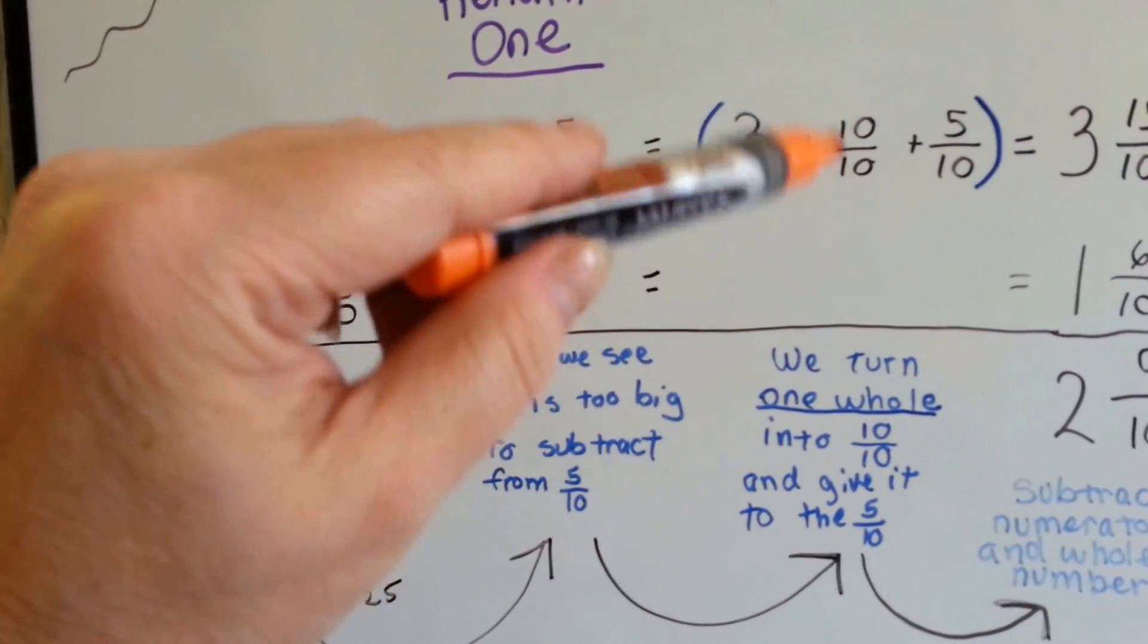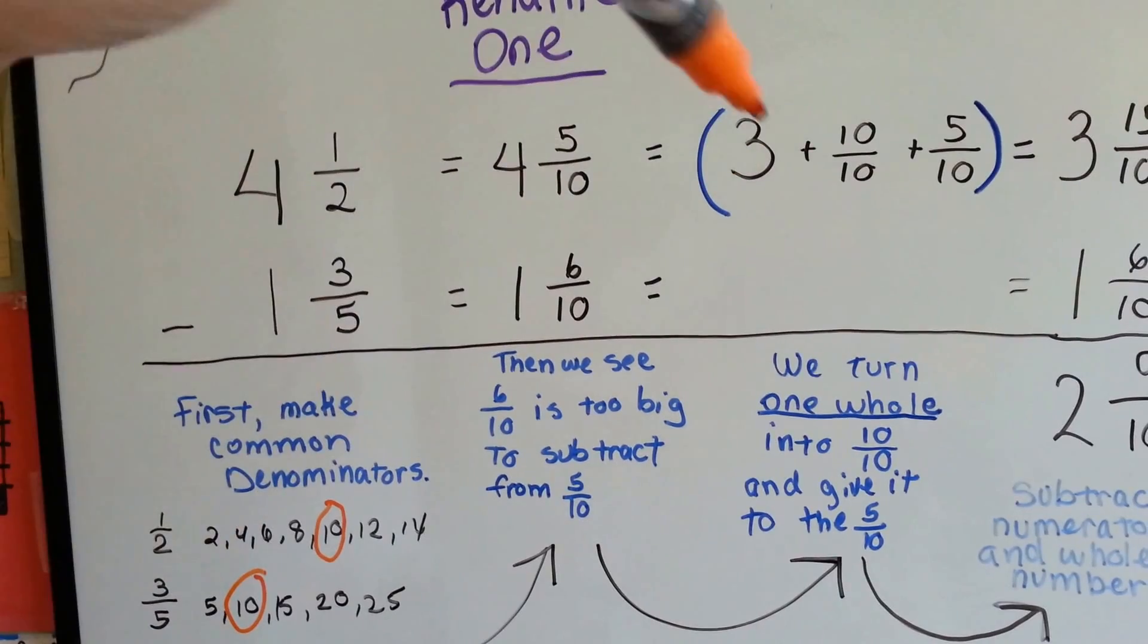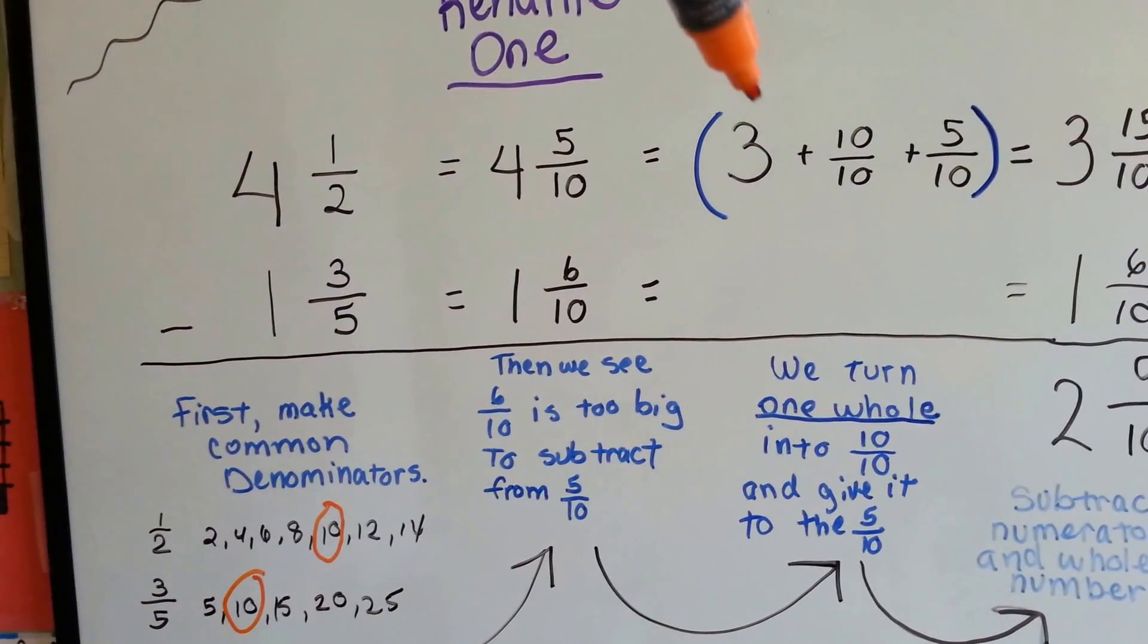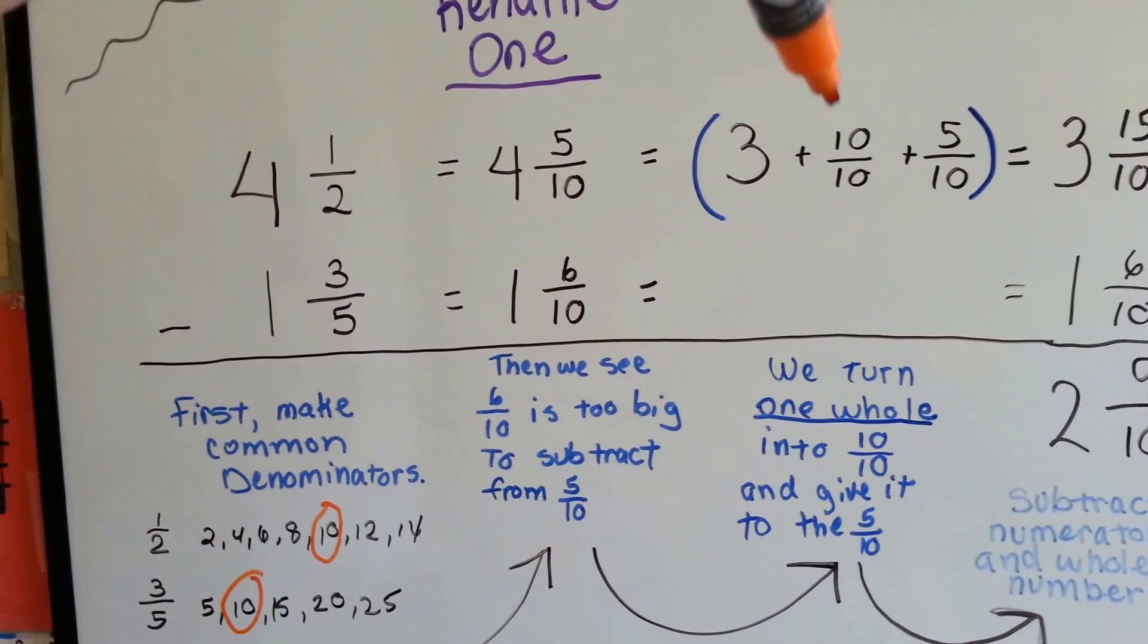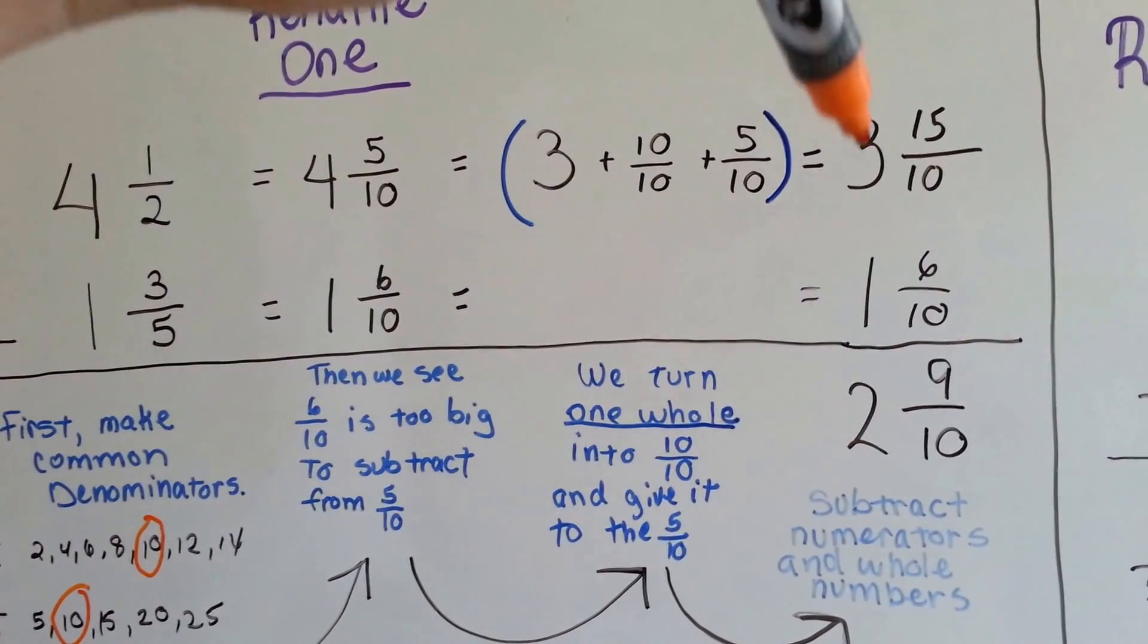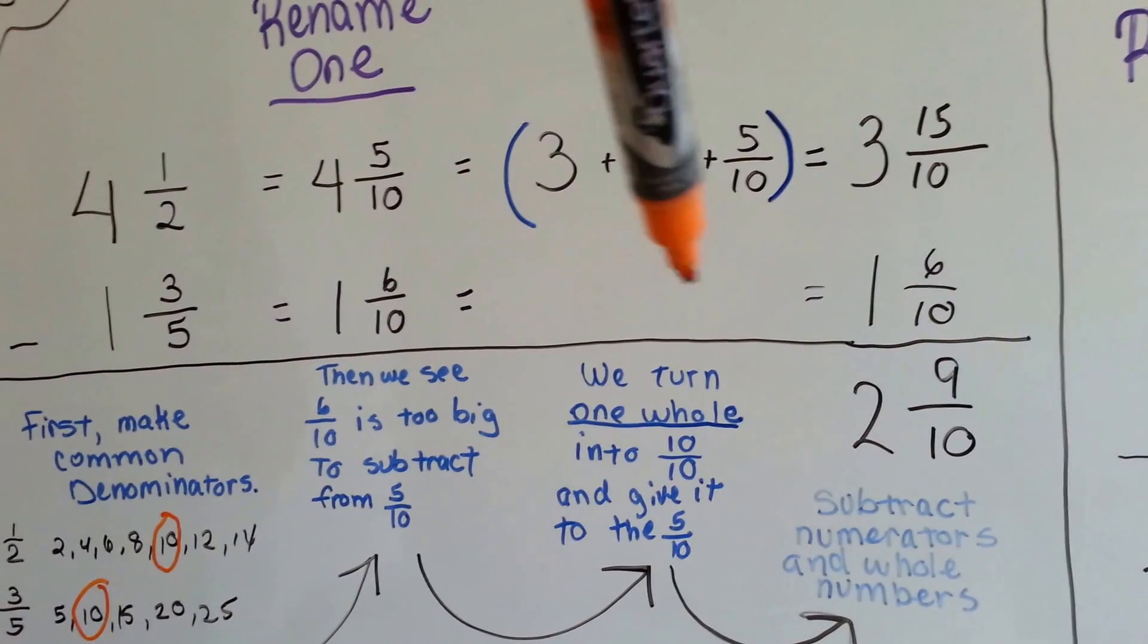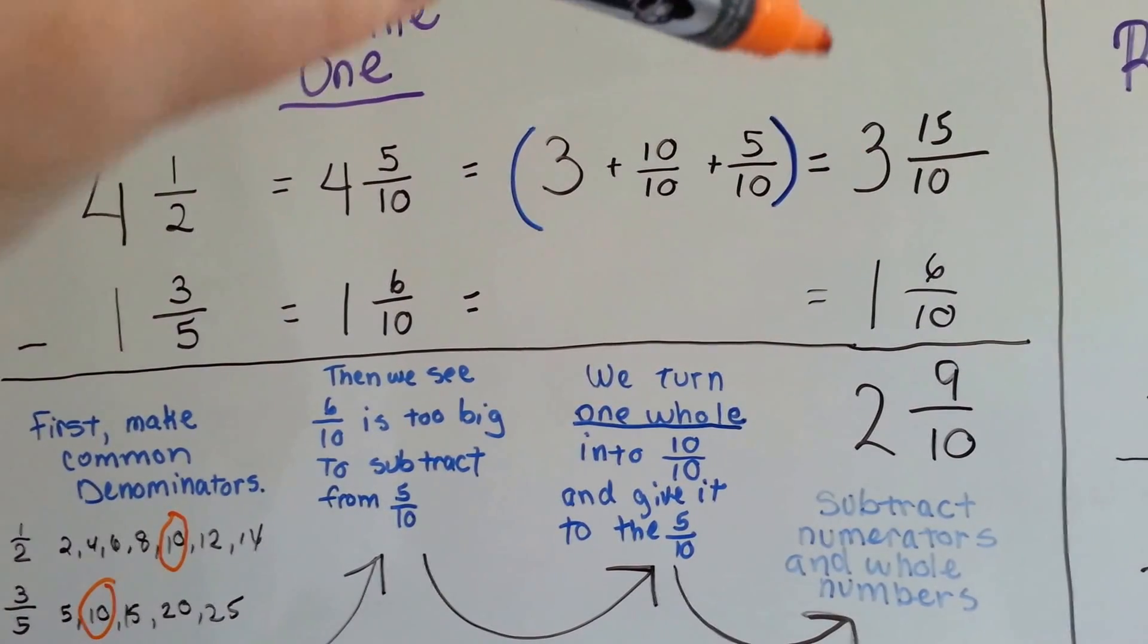Well, knowing that 10 tenths is the same thing as 1, what we do is we take a 10 tenths out of the 4. It becomes a 3 and we add the 10 tenths to the 5 tenths. It now becomes 3 and 15 tenths and we slide our 1 and 6 tenths over and then we can subtract.